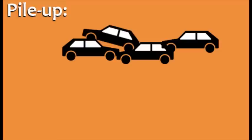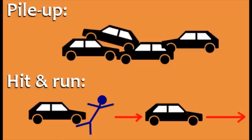When multiple cars hit each other, this is called a pile-up. Pile-ups often occur when the weather and road conditions are bad. Sometimes a car hits a person but instead of stopping, the driver drives away. This type of accident is called a hit-and-run.